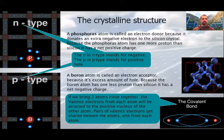On this slide, we see the crystalline structure of the silicon containing the two elements we saw before, the boron and phosphorus as impurities. They are connected to each other by the covalent bond and forming a crystal. In the right bottom corner of the slide, you can see how. According to Wikipedia, the basic idea of the covalent bond is, if we bring two atoms close together, the valence electrons from each atom will be attracted to the positive nucleus of the other atom. Pairs of valence electrons get shared between the atoms, one from each atom.